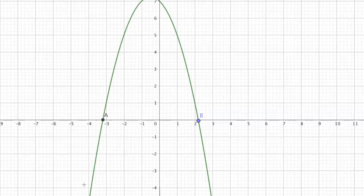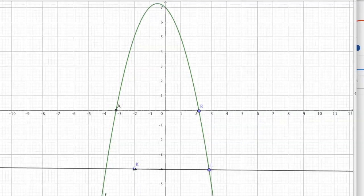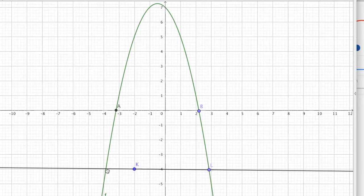So, negative 4 is below the x axis. So, I'm going to draw a line through negative 4. So, where you have the point of intersection, you are going to draw a line going up towards the x axis.